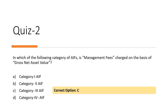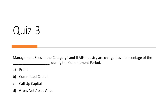The third question: management fees in Category 1 and Category 2 AIFs are charged as a percentage of what? The options are profit, call-up capital, gross net asset value, or committed capital. The answer is very clear — it is committed capital. The fee is charged as a percentage of committed capital during the commitment period.